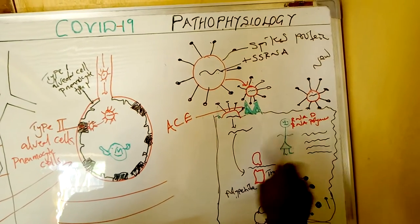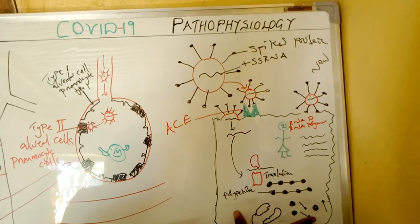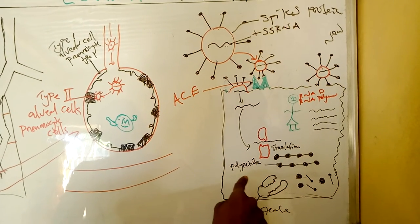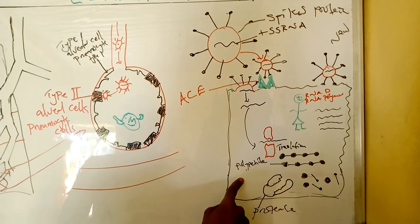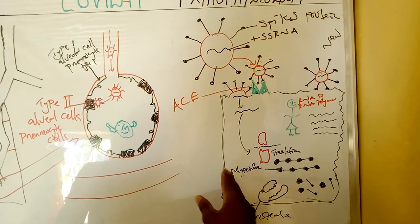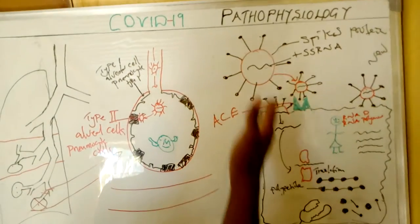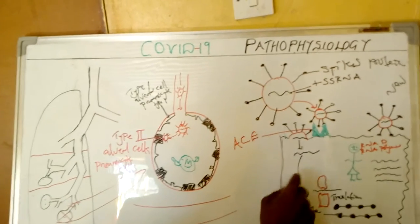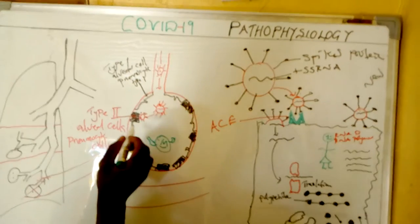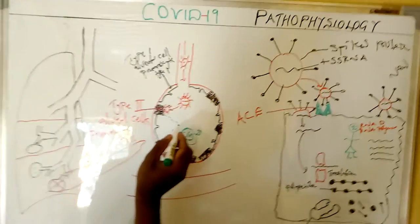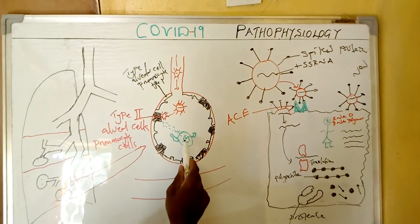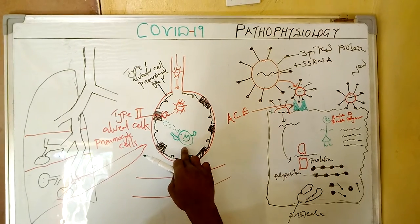As this pneumocyte cell has been used by the virus for replication, it's going to get damaged. Once this pneumocyte cell becomes damaged, it's going to release some cytokines. So we have a damaged type 2 pneumocyte cell which is releasing cytokines. These cytokines are going to stimulate and activate the macrophage inside the alveoli.